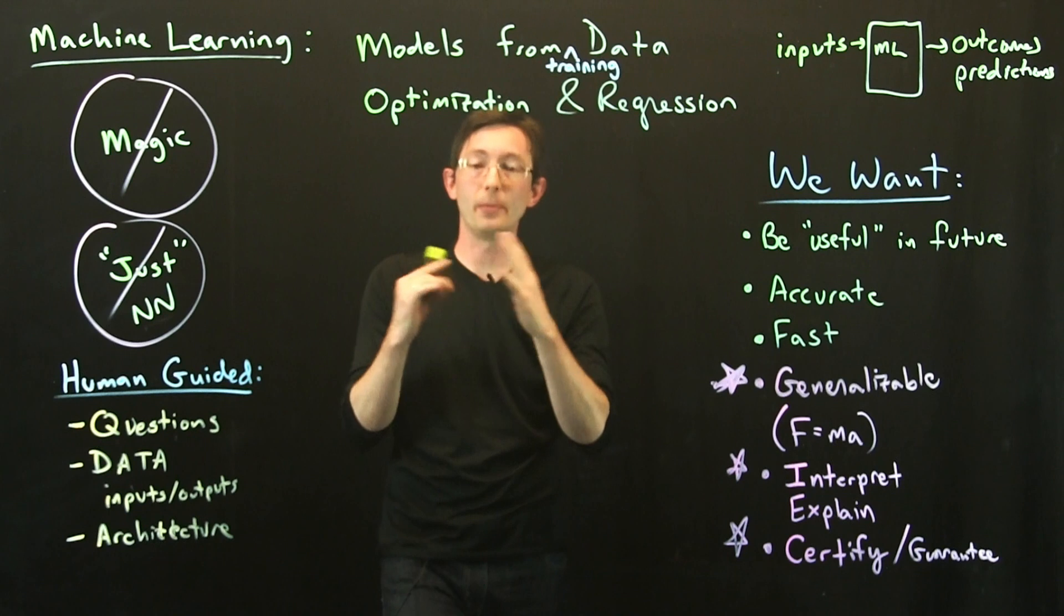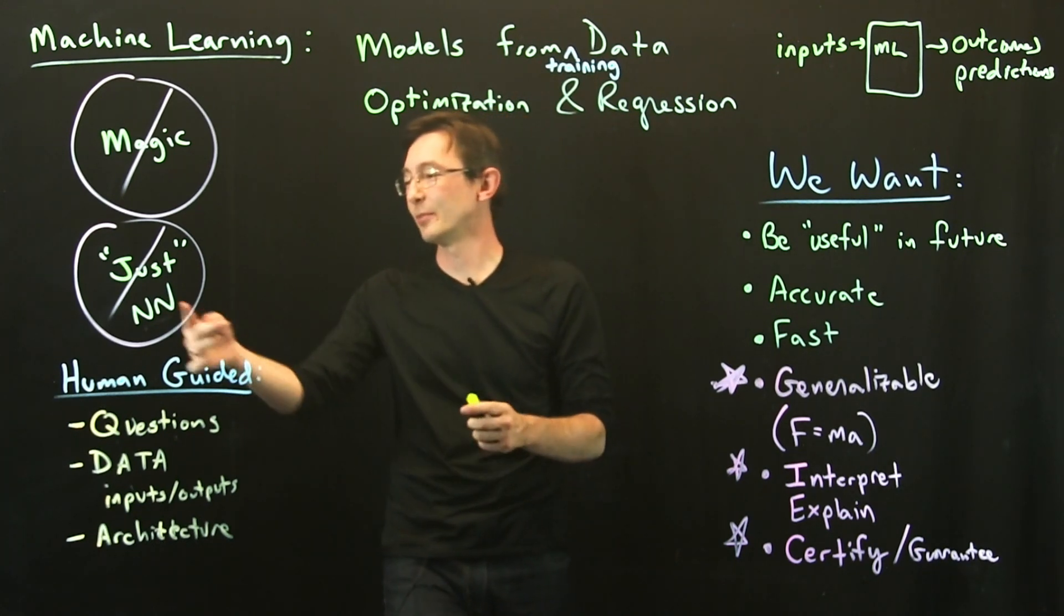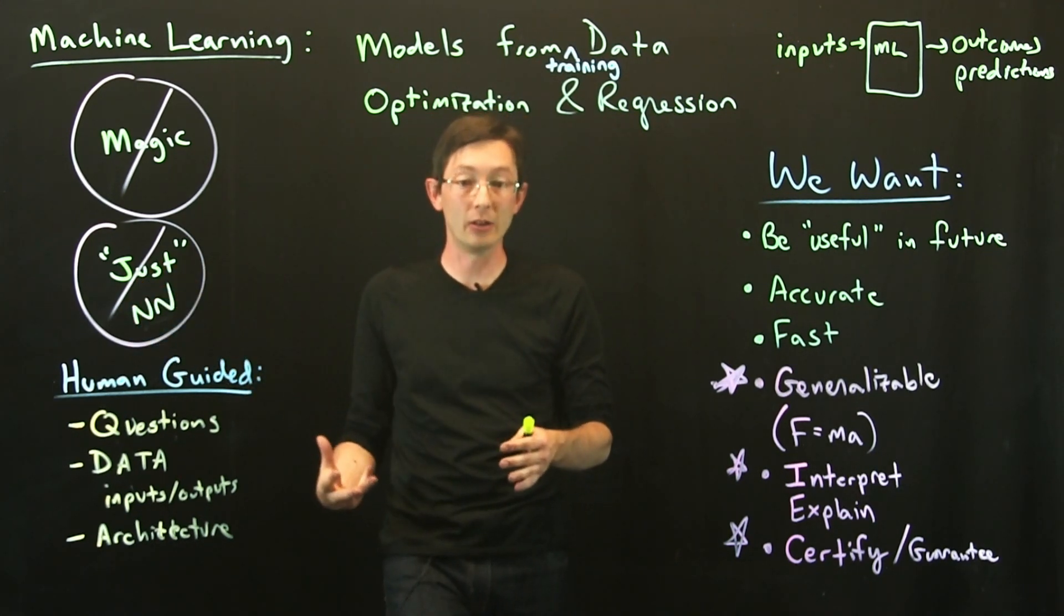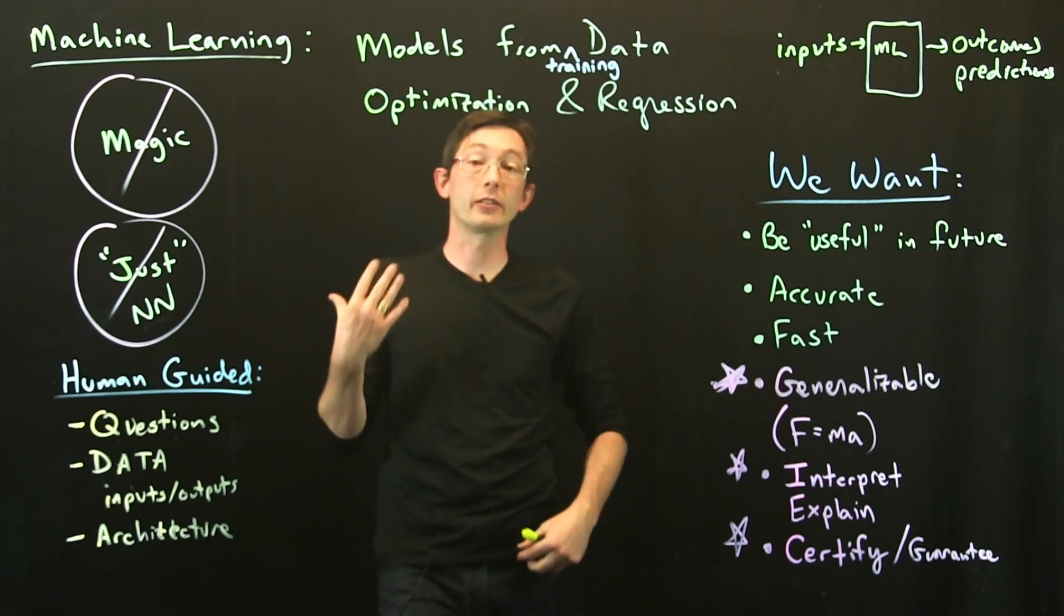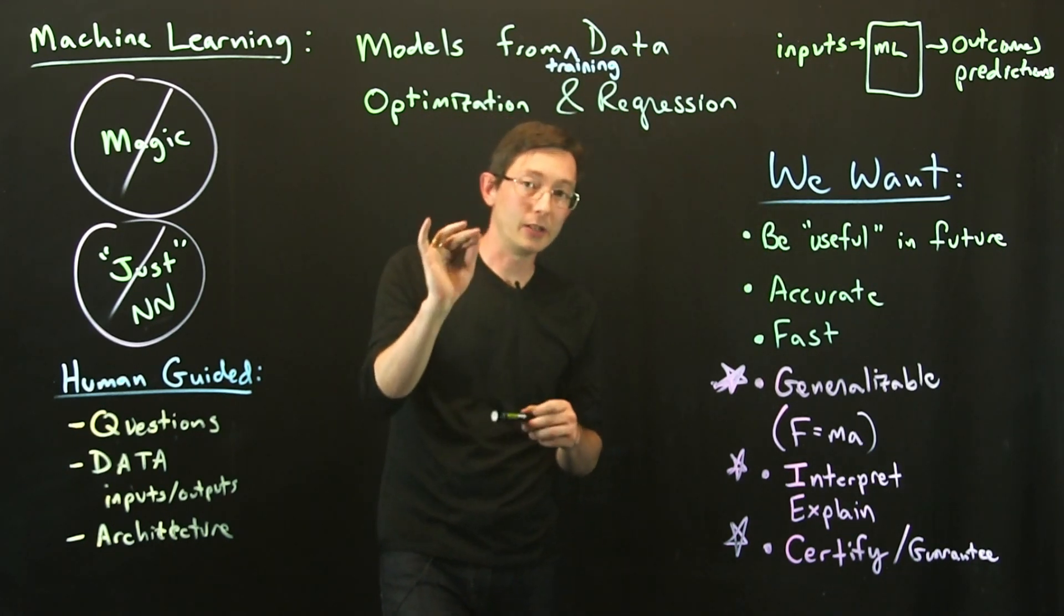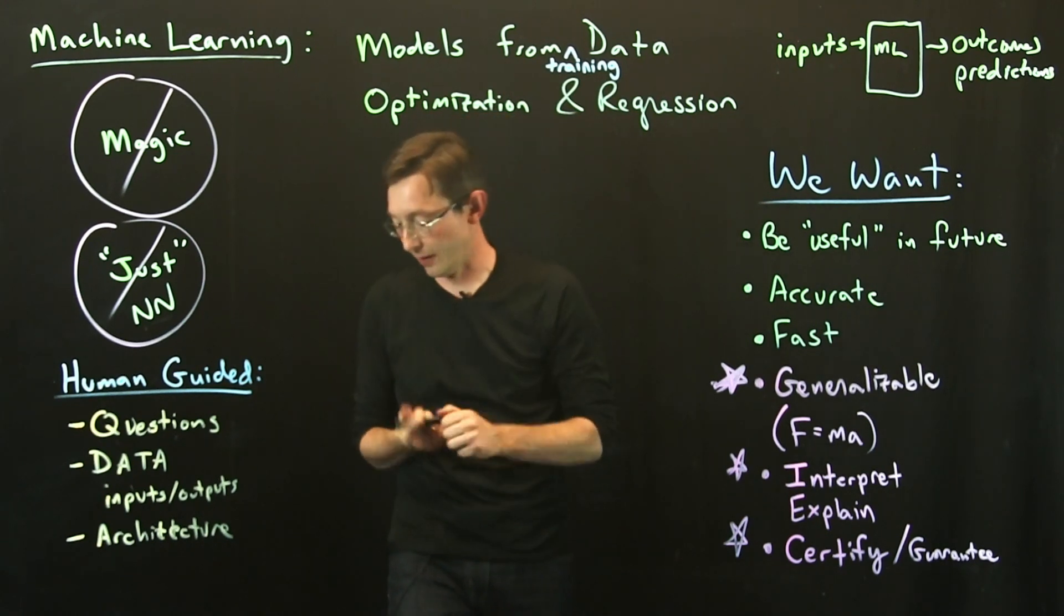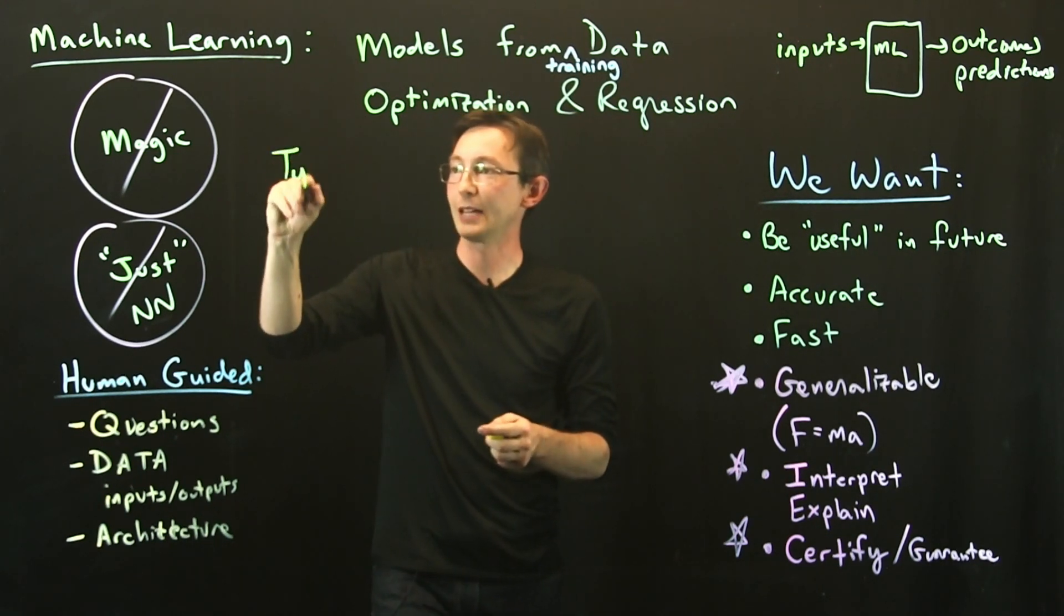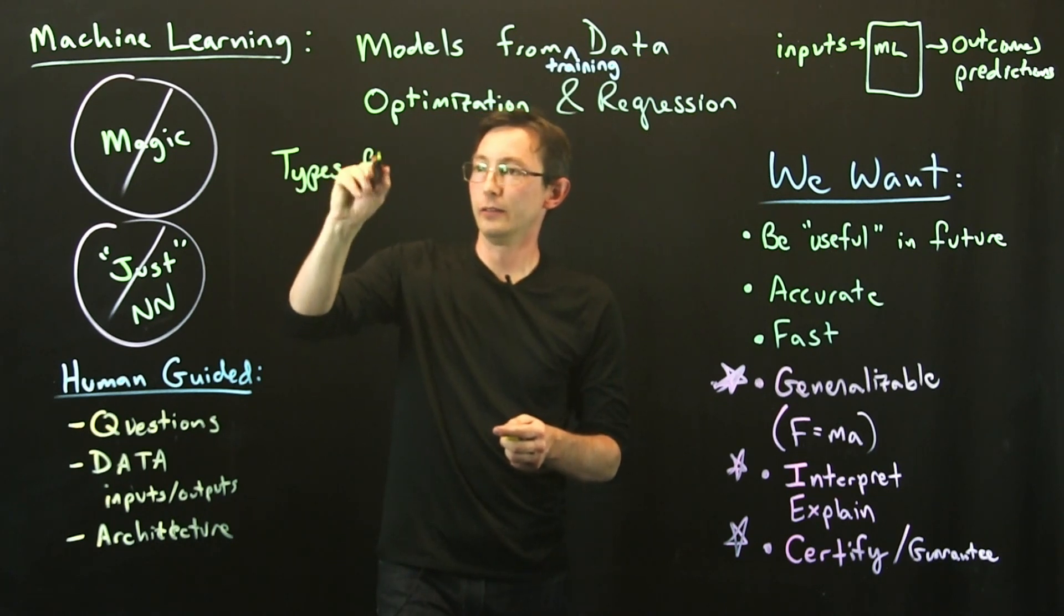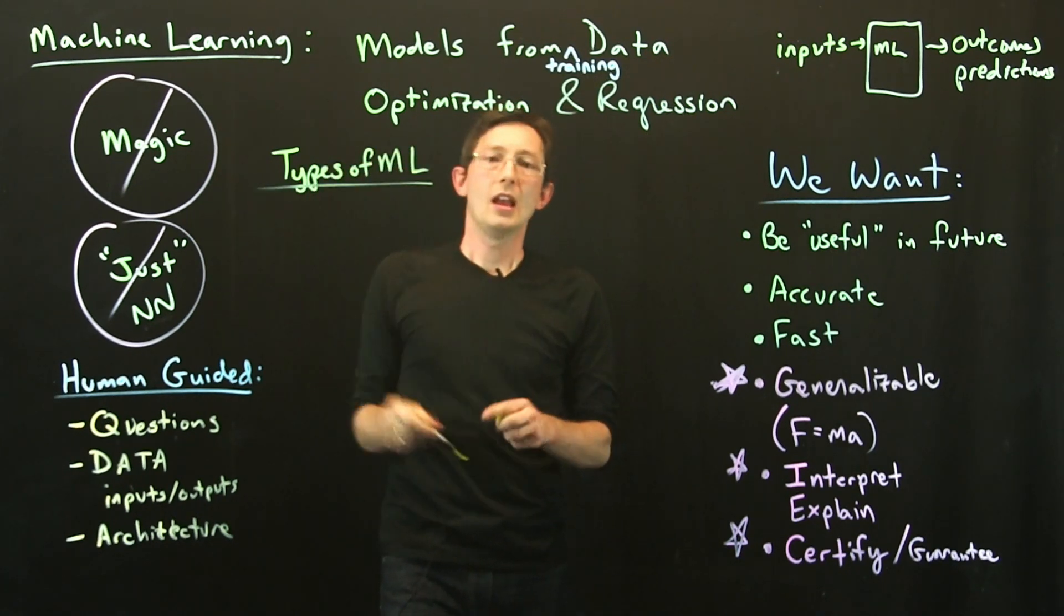There's so many different algorithms—so many flavors of neural networks alone, let alone all of the other machine learning models. But what I'm going to do is give you one of the most common breakdowns of types of ML.